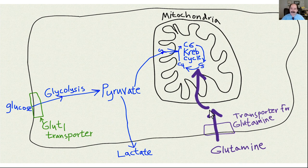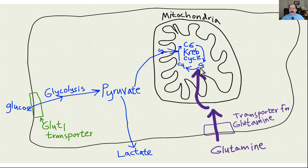Glutamine can do everything glucose can do and more, because it contains nitrogen. It's converted to glutamate, which enters the Krebs cycle as alpha-ketoglutarate, replacing Krebs cycle intermediates — a process called anaplerosis. Glutamine can replace Krebs cycle intermediates and keep cancer going even without glucose.